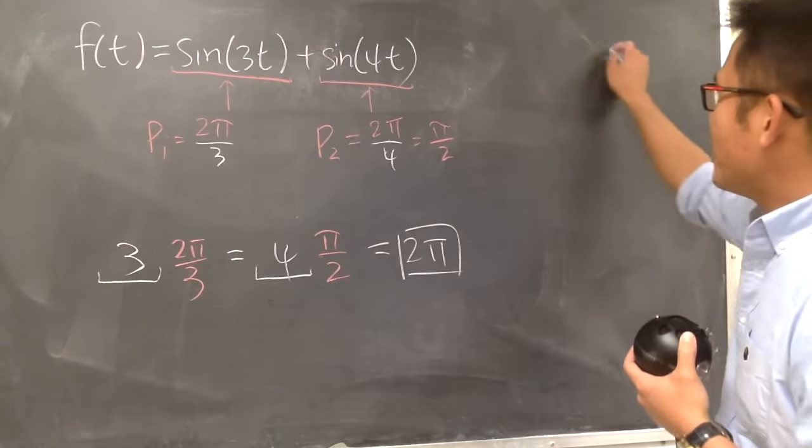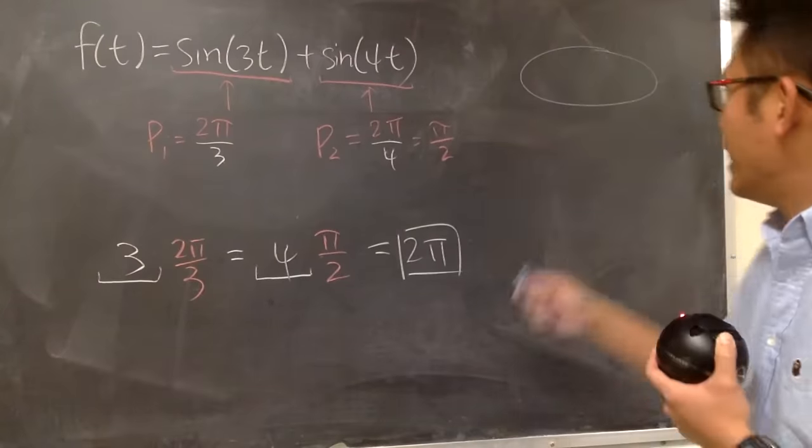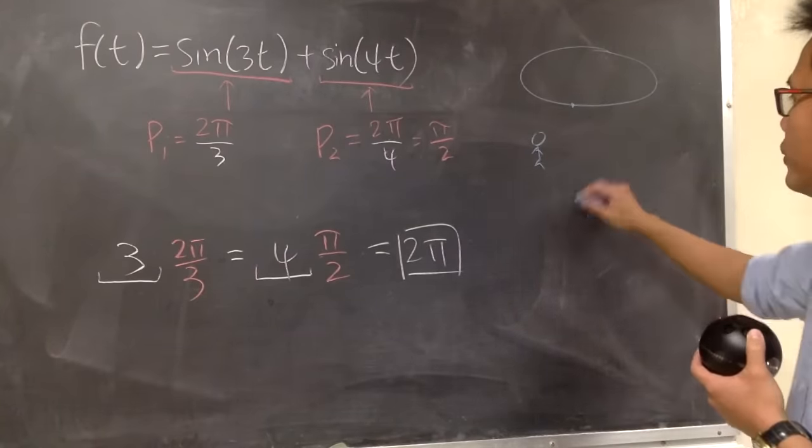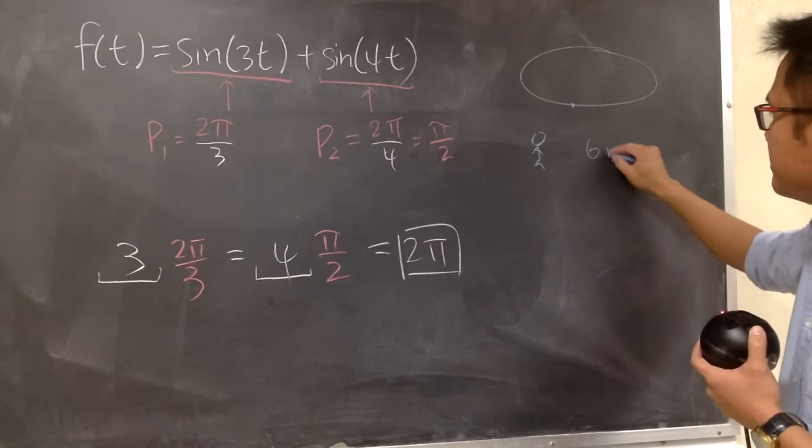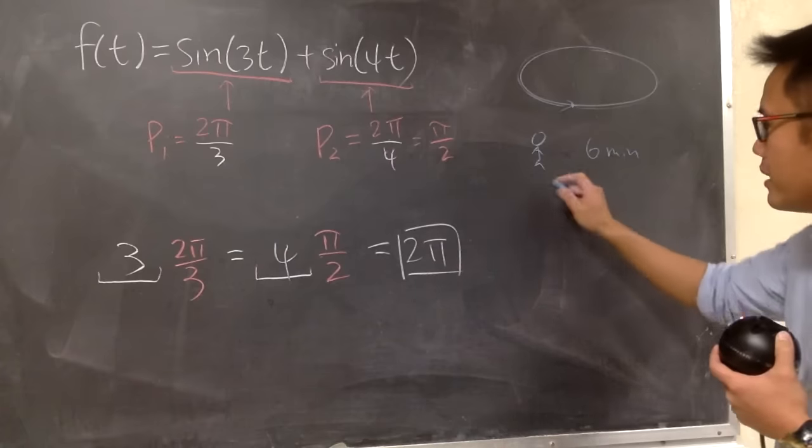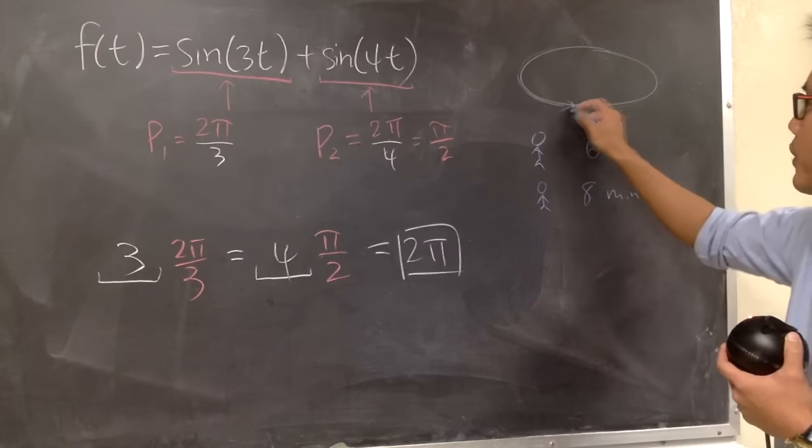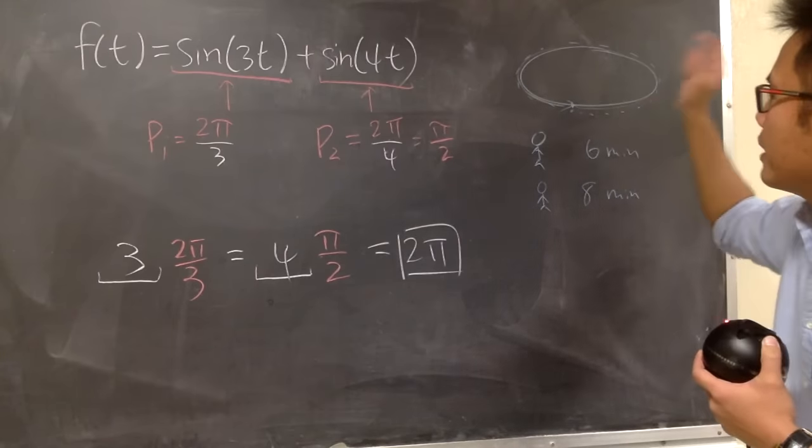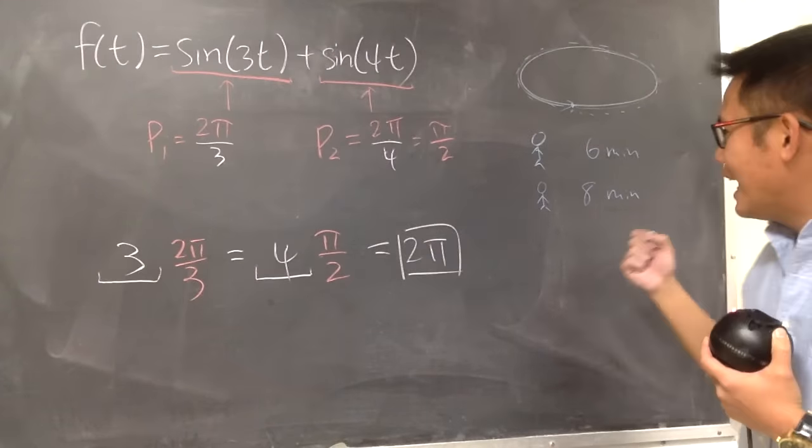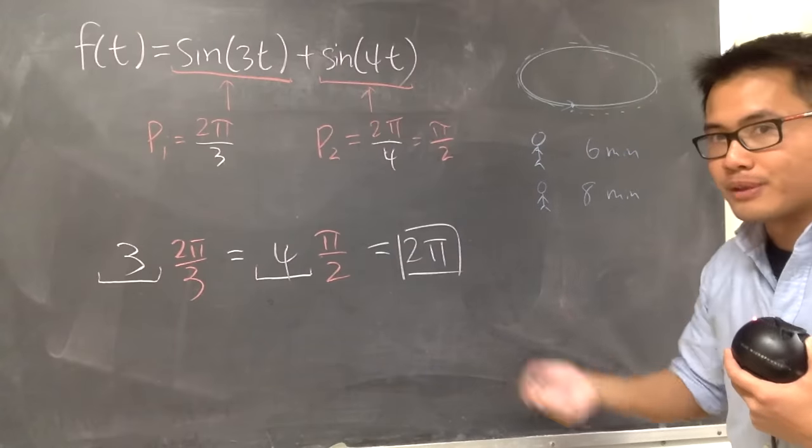So here is the deal. Suppose you're running around on a track. And you start right here. Let's say this track is one mile. And it will take you, let's say, six minutes to run the track, to run the mile. And it will take your friend eight minutes to start from here and then run the same track. Now, the question is, after how many minutes that you guys are going to meet again after you're starting at the same point at the same time?